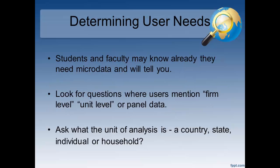Determining user needs: students and faculty may already know they need microdata and will tell you. If you're trying to determine whether aggregate or microdata are needed, you want to look for a few clues in the question. Users may mention firm level, unit level, or panel data. They may describe something from a survey or want to get all their observations from the same place. You can always ask: what is the unit of analysis? Is it a country, a state, a firm, an individual, a household? If they respond households or individuals, it's usually a good clue that microdata may suit their needs better.